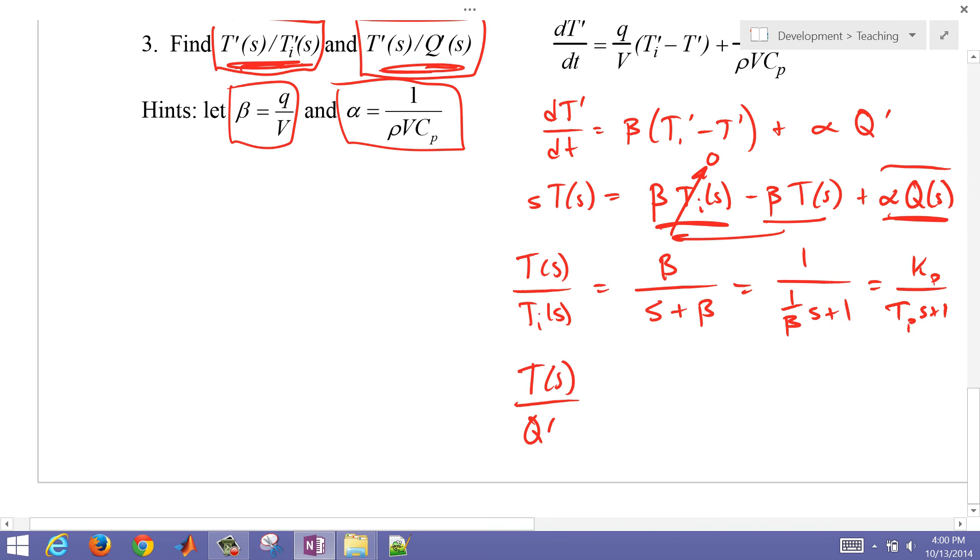T of S over Q of S is going to be alpha divided by S plus beta, and then my gain is going to be alpha over beta, and my time constant, again in this case, is going to be 1 over beta.